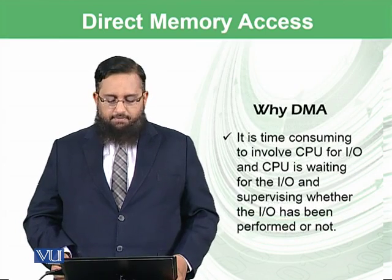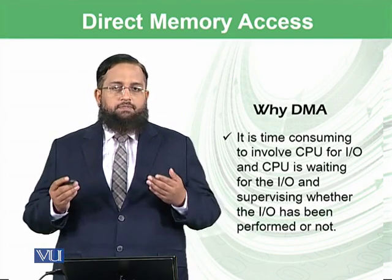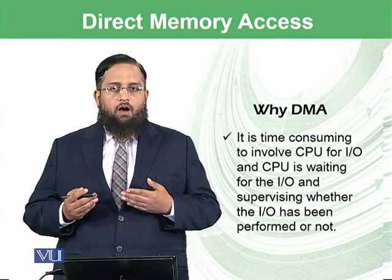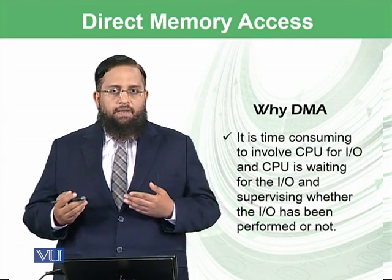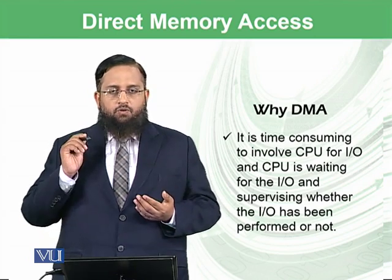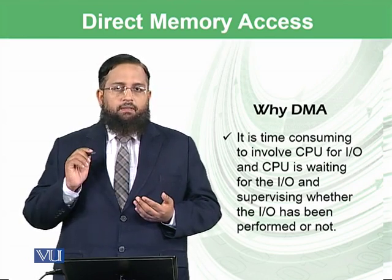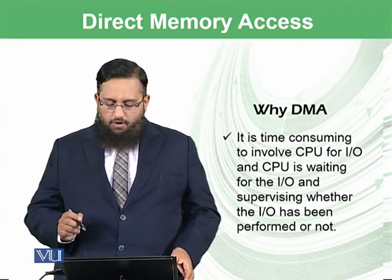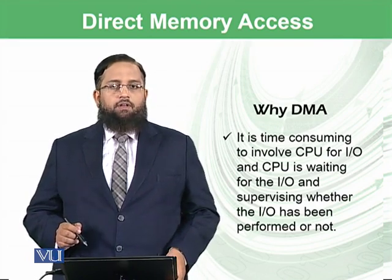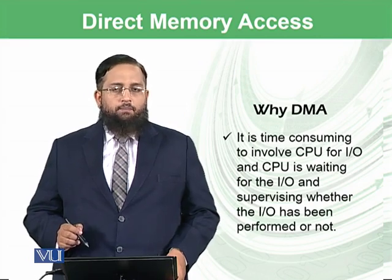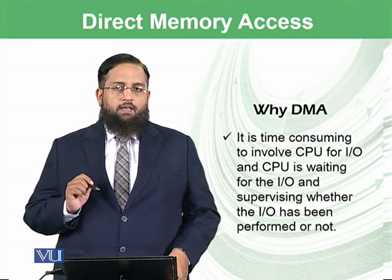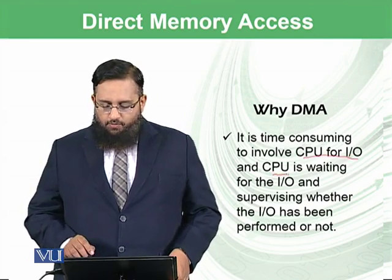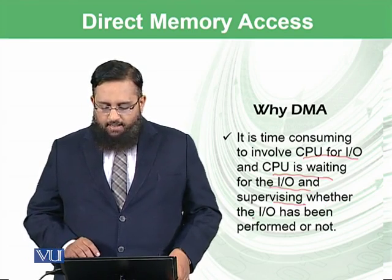Why do we need direct memory access? It is very time consuming for the CPU to communicate with IO. Our CPUs are very efficient — they perform billions of instructions per second. So if the CPU wants to write something to the printer, it cannot wait for the printer to finish writing everything. In such a situation, a controller can take on that task itself, letting the CPU free. To avoid involving the CPU in IO and having it wait and supervise whether IO has been performed or not.